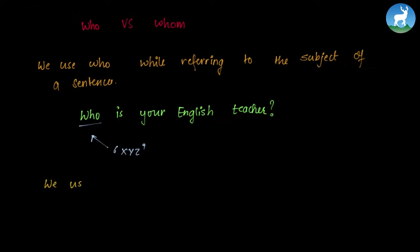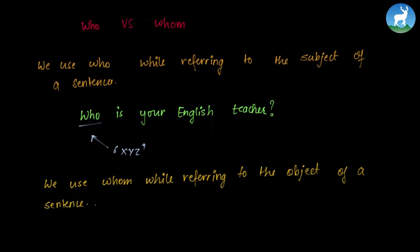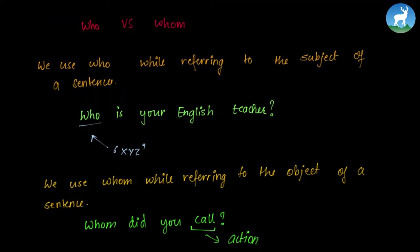We use whom while referring to the object of a sentence. For example: 'Whom did you call?' — to call someone is an action, and the answer of whom is the object of the sentence. If you're calling Sita, the answer is Sita — Sita is the object because you're performing an action on Sita. Now let's look at some more examples.